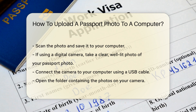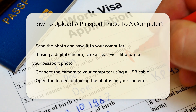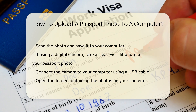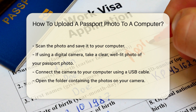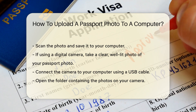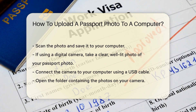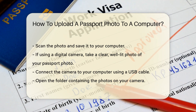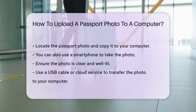If using a digital camera, take a clear, well-lit photo of your passport photo. Connect the camera to your computer using a USB cable. Open the folder containing the photos on your camera, locate the passport photo and copy it to your computer.